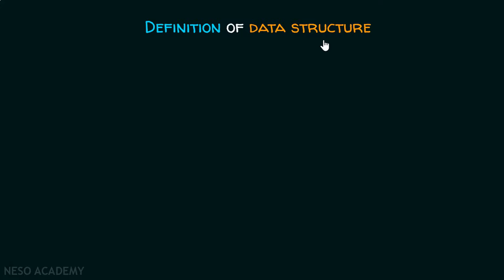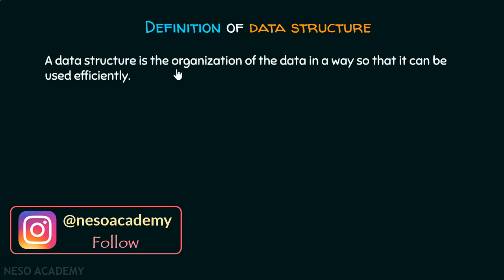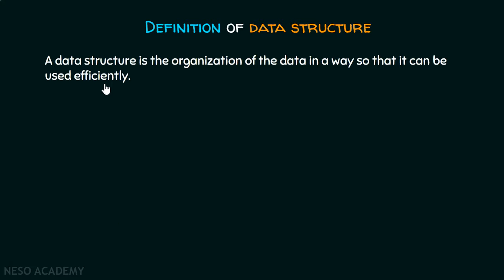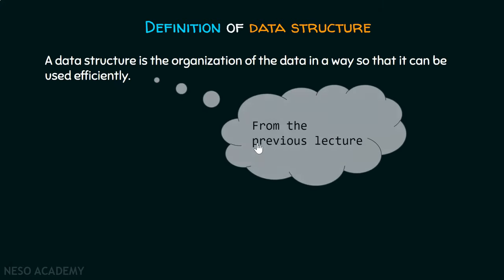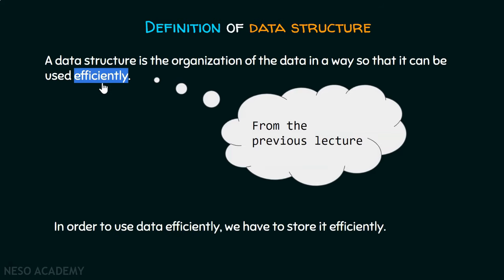I am going to discuss the definition of data structure once again. A data structure is the organization of data in a way so that it can be used efficiently. We want to use our data efficiently and perform some operations on it. For this purpose, we use a data structure which is efficient in terms of storing the data so that we can use it efficiently. This definition is taken from the previous lecture. This 'efficiently' term is very important — in order to use data efficiently, we have to store it efficiently.